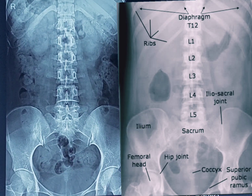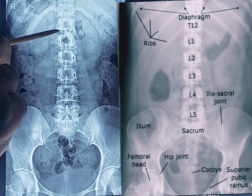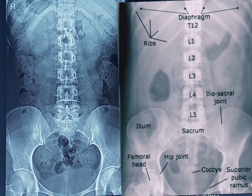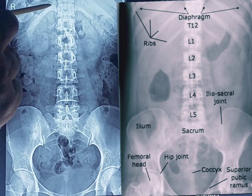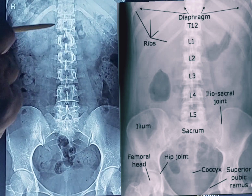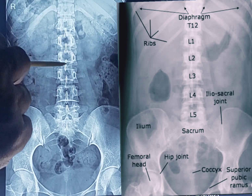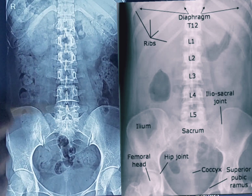If I ask you how to count the ribs or vertebrae from this X-ray film — the lowest rib is the twelfth rib, this is the twelfth vertebra, then lumbar, then sacral.